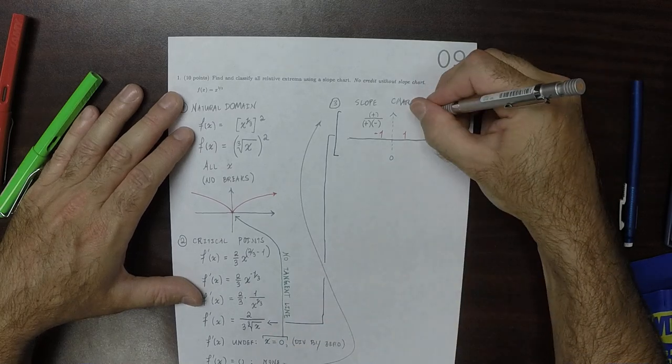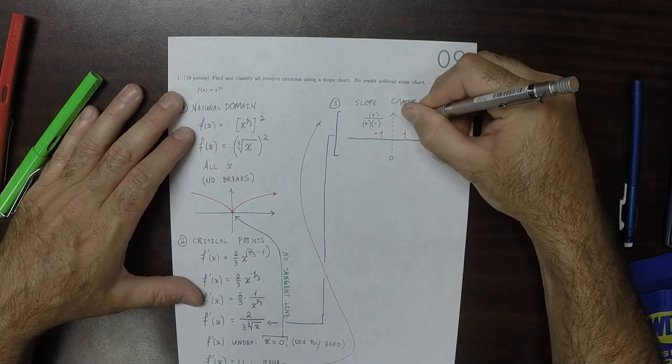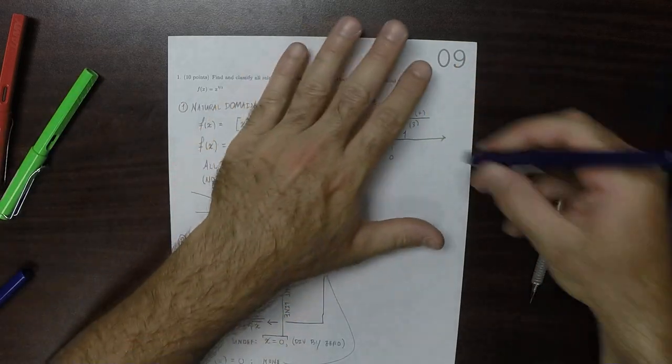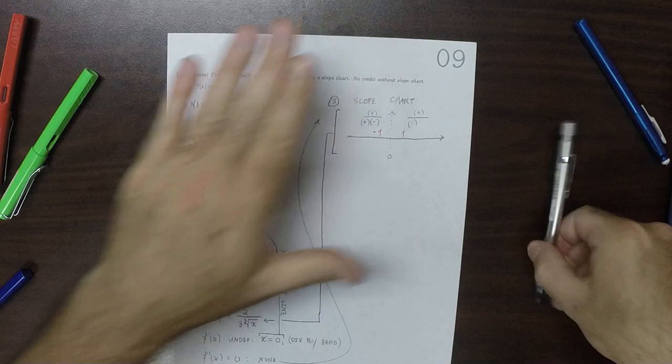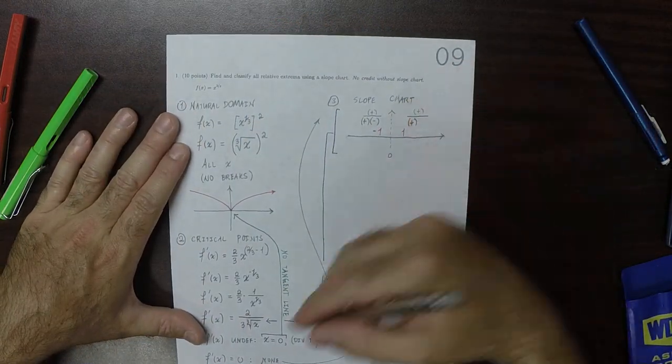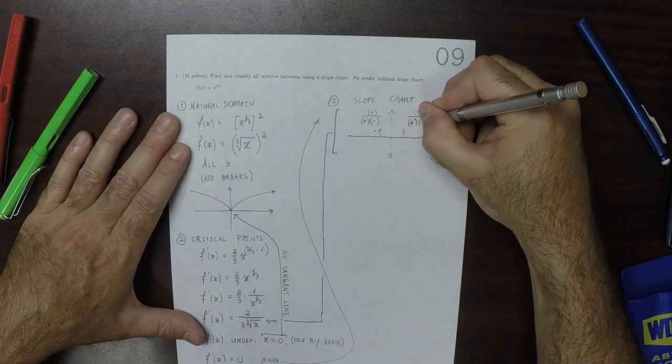And then, plugging in one, two, so two is positive. Three is positive. Oops. Three is positive. And then, the cube root of one is one, which is positive.